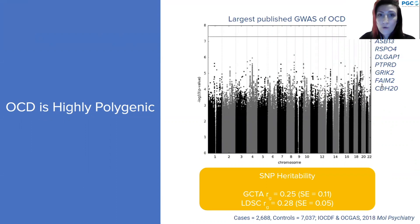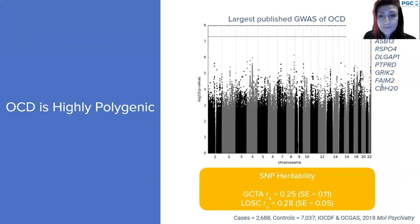OCD is highly polygenic — there is no one genetic variant for OCD. There are likely hundreds of thousands of genetic variants contributing to OCD risk, and a lot of this evidence comes from genome-wide association studies. The largest published GWAS of OCD to date comes from a meta-analysis of two large consortia, the IOCDF and OCGAS, which are now part of the PGC-OCD sample. Although the study didn't identify any genome-wide significant variants, it did identify variants in or close to genes previously associated with OCD or involved in brain function.